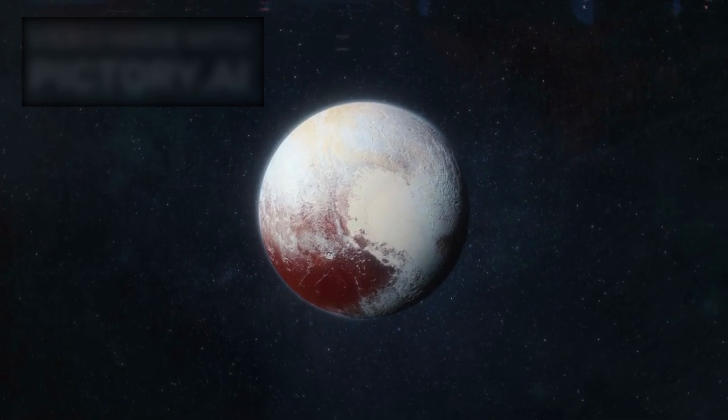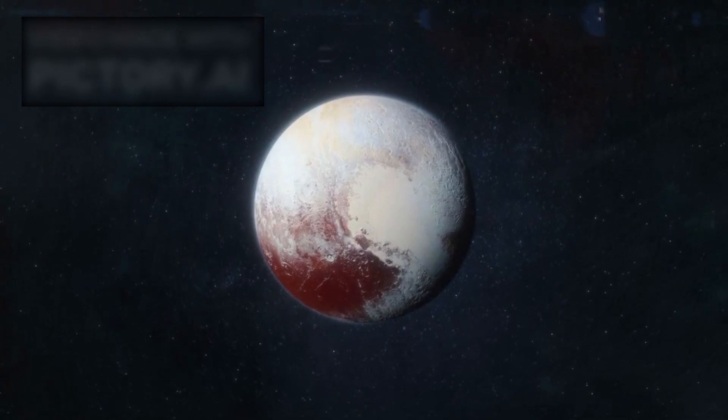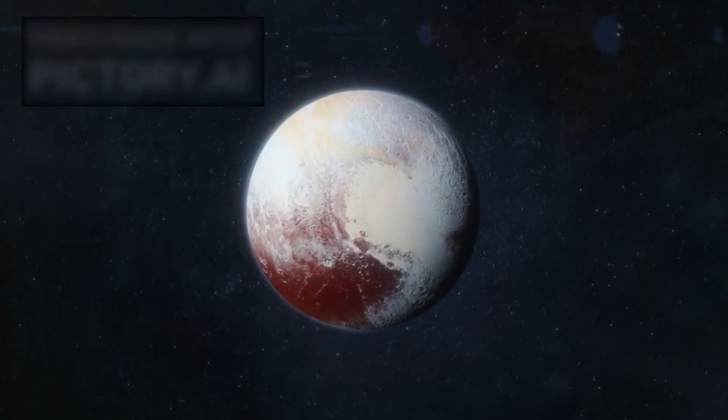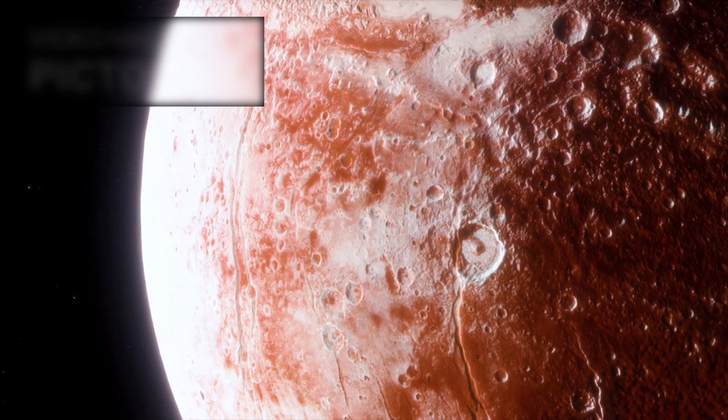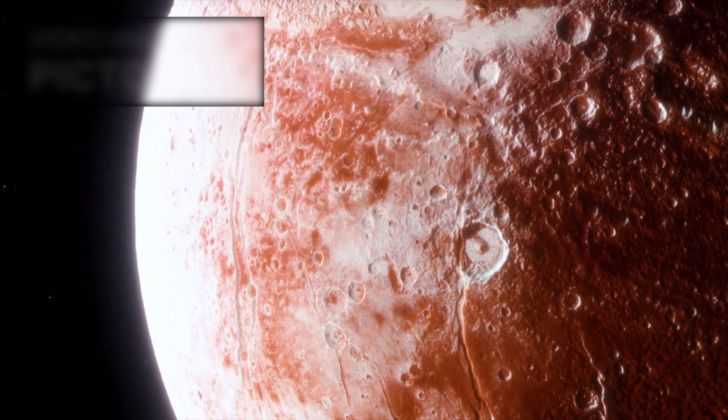Adding to the intrigue is Pluto's gravitational relationship with its largest moon, Charon. Unlike most planet-moon systems, Pluto and Charon are locked in a unique binary orbit, circling a shared point in space between them.